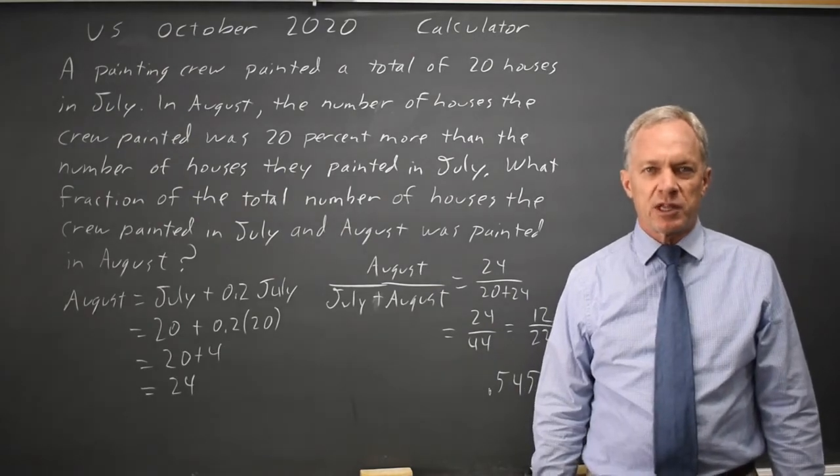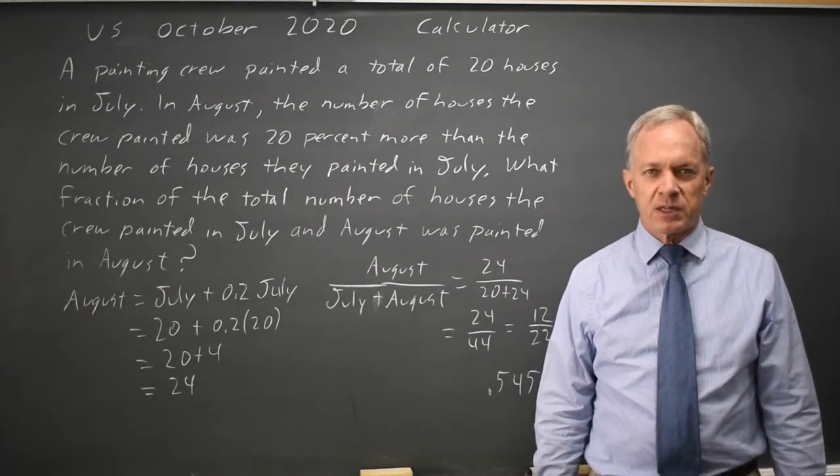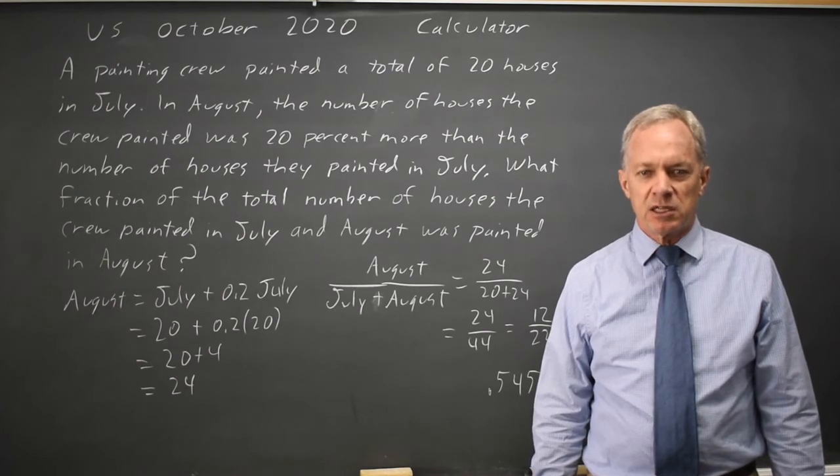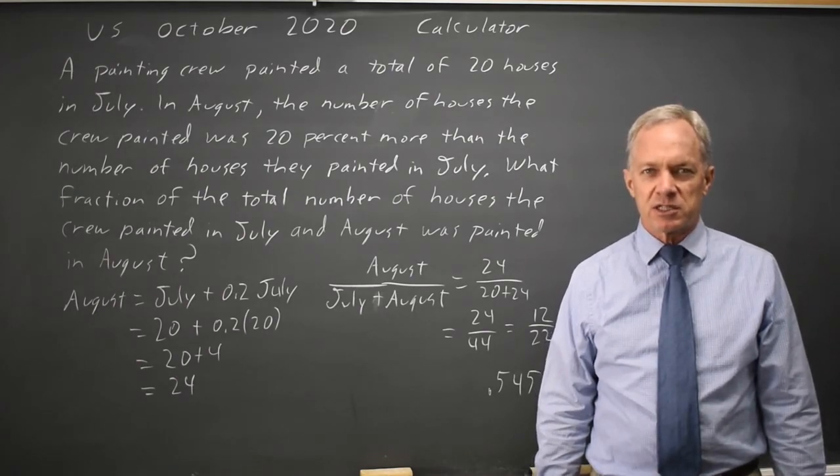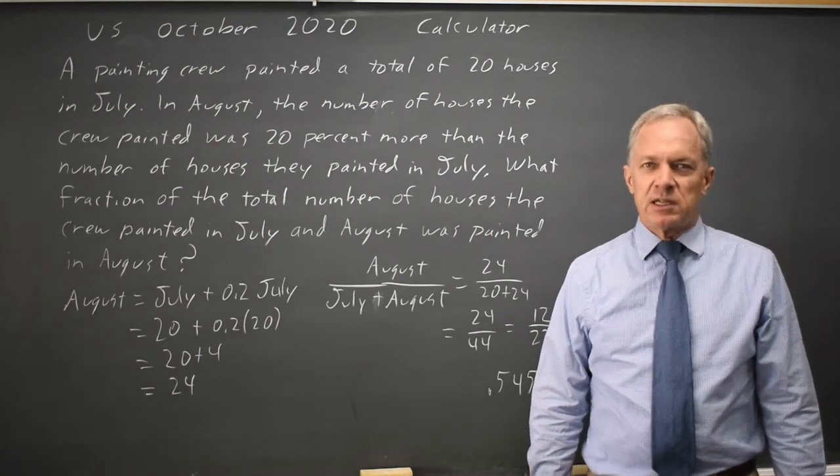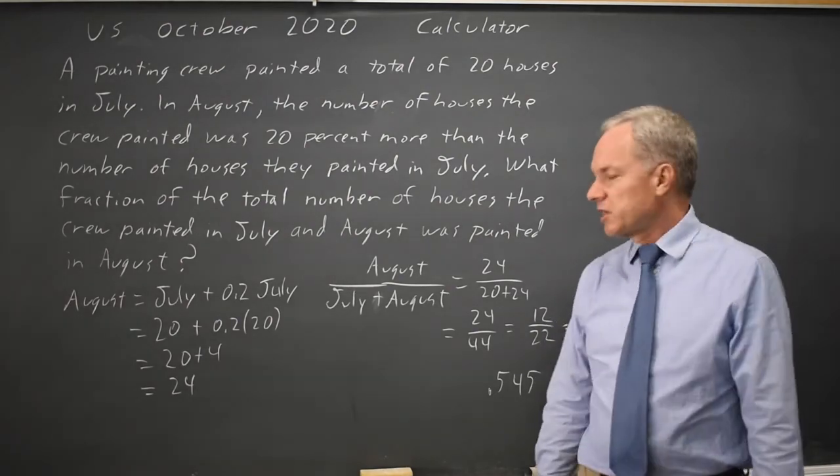And if I just did .54, that would probably be wrong. You need to use all the digits to fill in all the boxes according to their instructions. I shouldn't say probably wrong, but it would definitely be wrong.